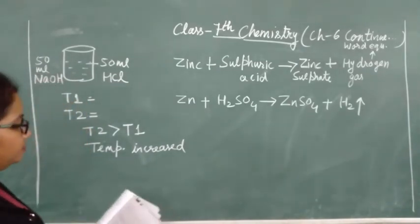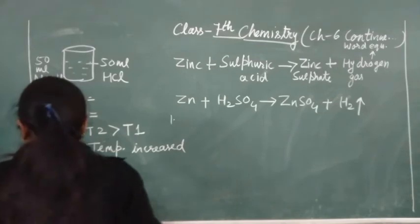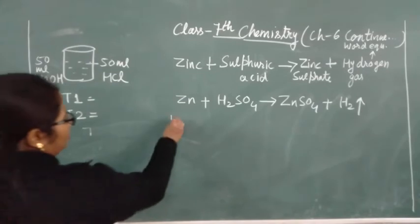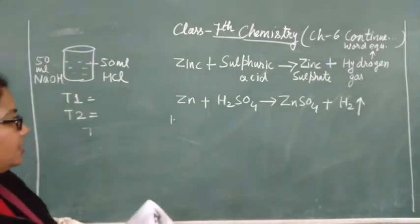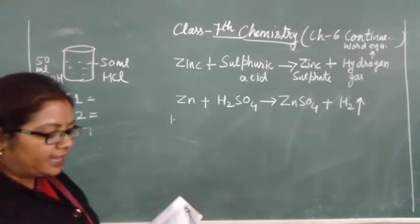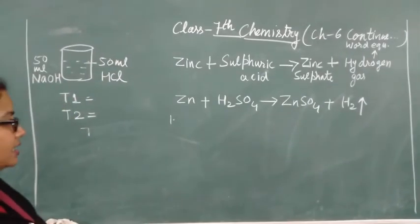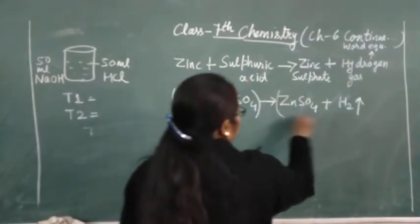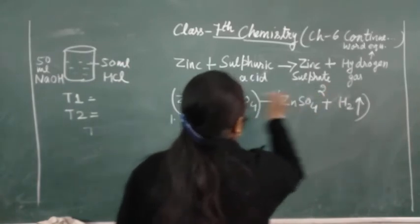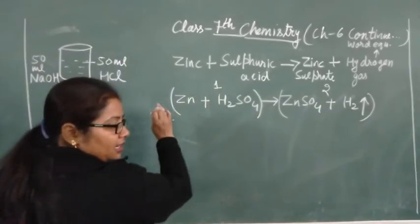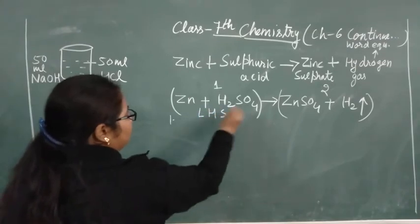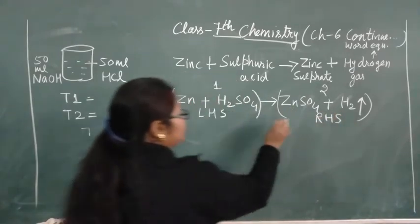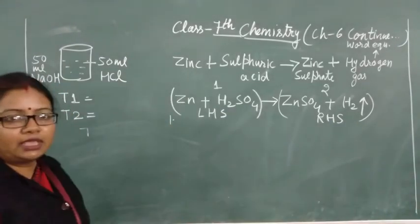With the help of a chemical equation we can get some information. The first information is that there are two parts of a chemical equation: the left hand side, LHS, and the right hand side, RHS. You can see this part is on the left hand side, so it is called LHS, and this part is on the right hand side, so it is called RHS.